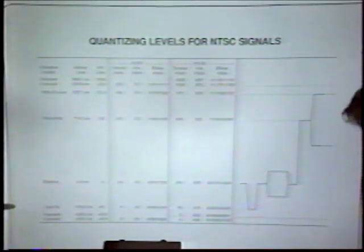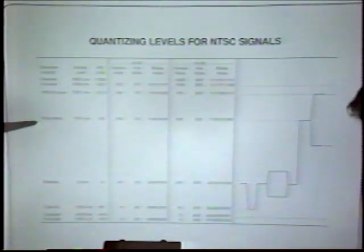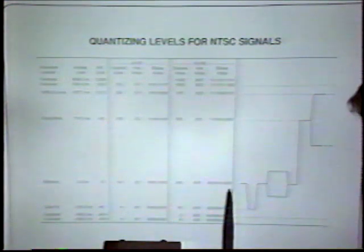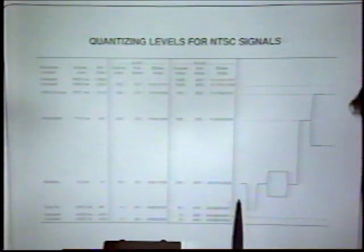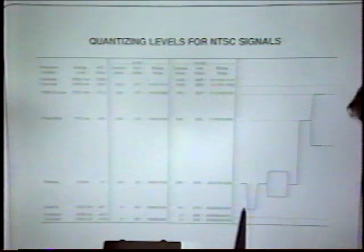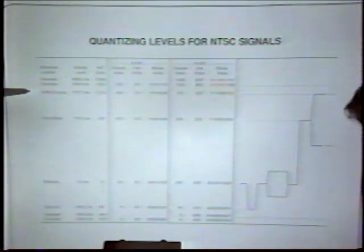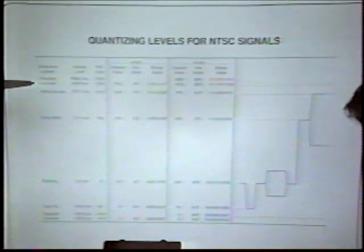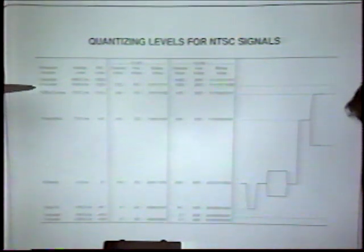Notice that for the special values of sync tip, blanking, and peak white, the conversion from 8-bit to 10-bit just involves having two extra zeros on the end — so there is no value change when you convert from one to the other. Also, the peak 100% chroma still has some headroom below the largest excluded value of about 50 millivolts, giving you plenty of headroom for the large 100% bars.